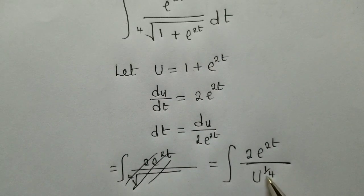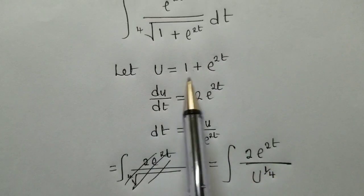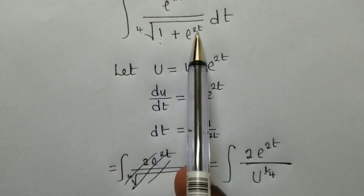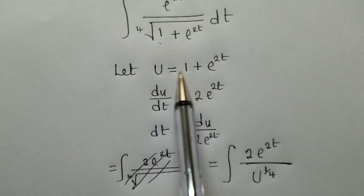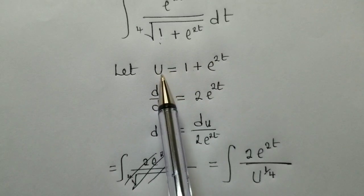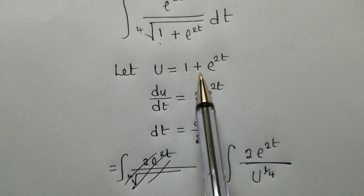So why have we said u power 1 over 4? Because here, we said all this be equal to u. What is inside here? Be equal to u. So now, we know that fourth root is the same as the power 1 over 4.